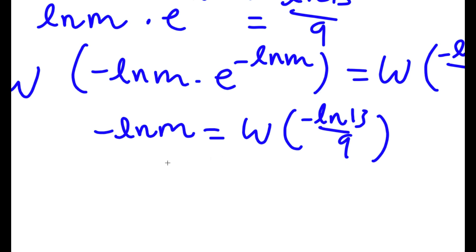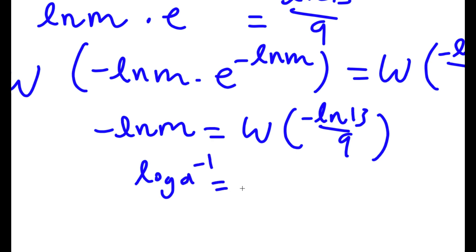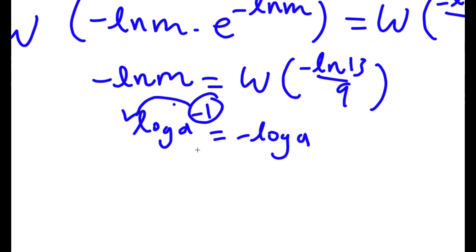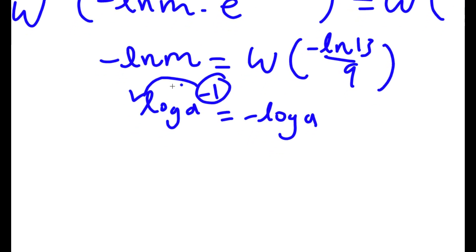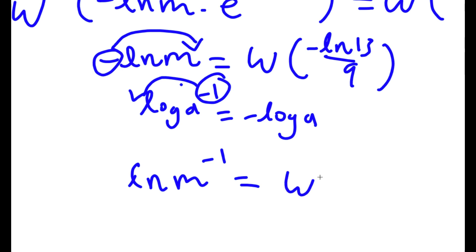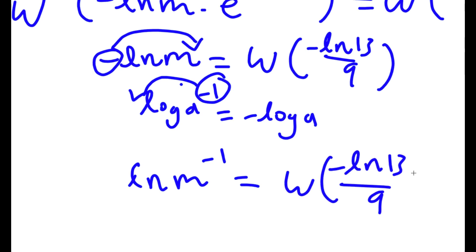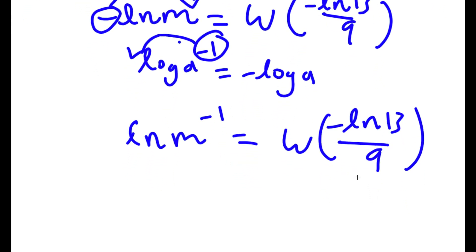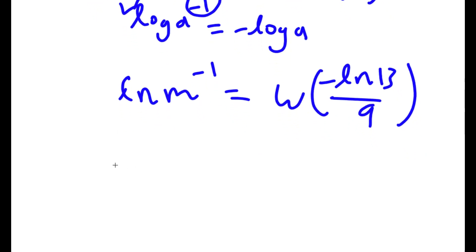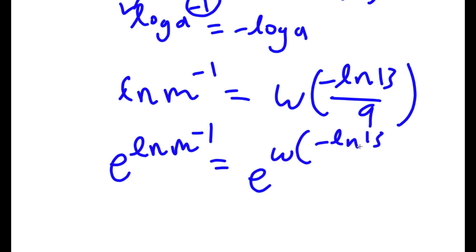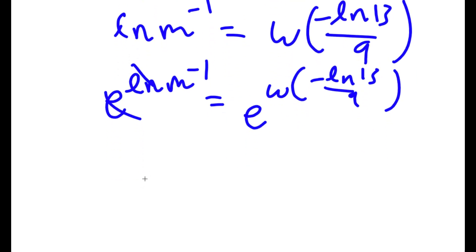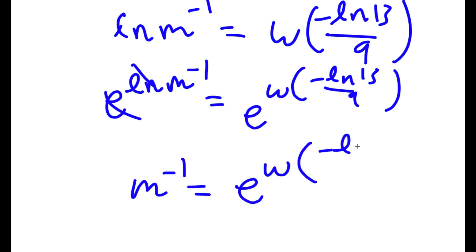Now if I have log a to the power of negative 1, this equals negative log a, because I can move the exponent to the front. So this negative becomes an exponent, giving ln m to the power of negative 1 equals W of negative ln 13 over 9. Taking e of both sides, e to the power of ln m to the power of negative 1 equals e to the power of W of negative ln 13 over 9. The e and ln cancel, leaving m to the power of negative 1 equals e to the power of W of negative ln 13 over 9.